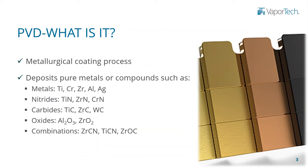PVD, or physical vapor deposition — I like to call it a metallurgical coating process. It's definitely not a paint, powder coating, or a chemical paint of any sort of liquid. If you're going to relate it to something, it's more related to electrochemical plating than anything else. However, the way it's produced is so different that it's a unique process. We call it a metallurgical process because it applies at least one metal on the surface of a part.